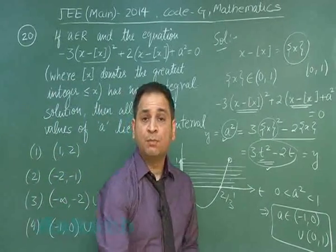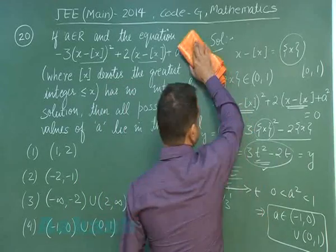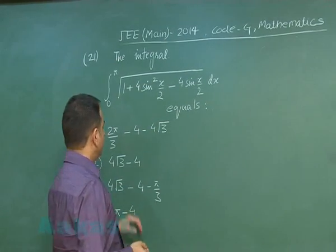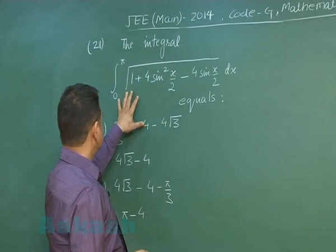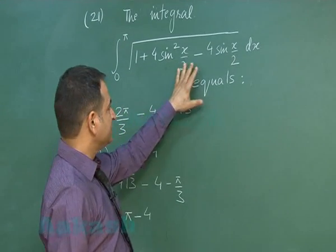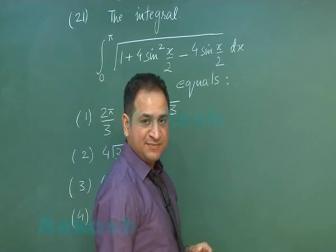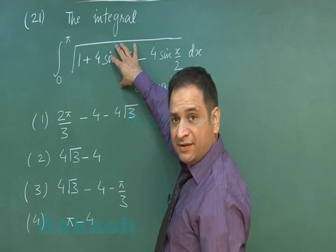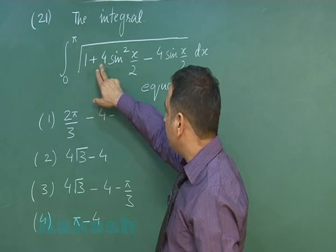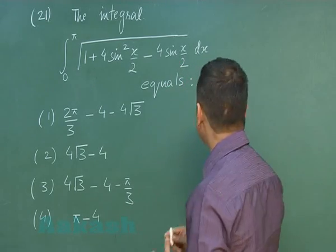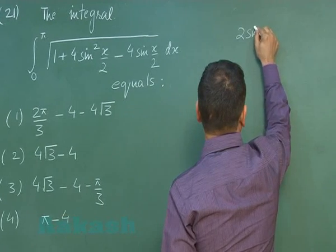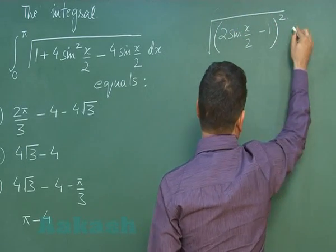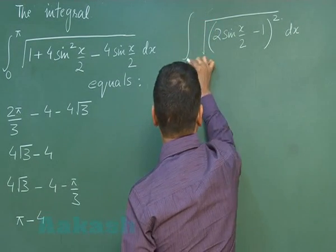Moving to problem number 21, we have to evaluate the integral from 0 to π of √(1 + 4sin²(x/2) − 4sin(x/2)). Although it seems complicated, the expression inside the square root is 1 + 4sin²(x/2) − 4sin(x/2), which is the complete square of (2sin(x/2) − 1).